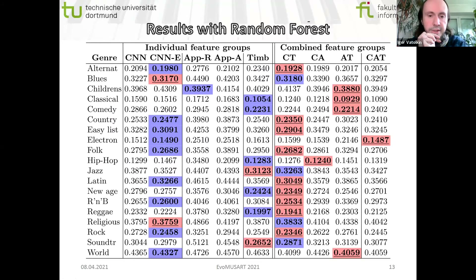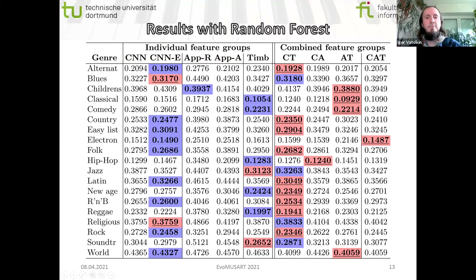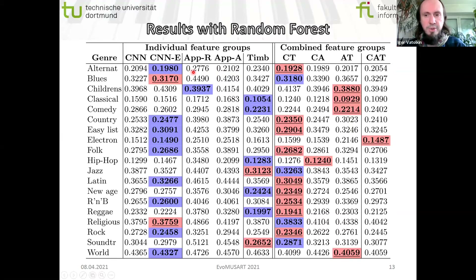Coming to results — quite a large table. We have 19 different genres, and individual feature groups: CNN features, CNN ensemble features, approximative features ranked, approximative features all, and timbre baseline. A second experiment used combined feature groups: CNN features together with timbre features, CNN with approximative features, approximative with timbre features, and all together. Bold numbers correspond to the best error for individual feature groups per genre — we want to reduce error, so smaller values are better. For combined feature groups, the best is also marked in bold, and underlined numbers correspond to error values that were the very best for each genre.